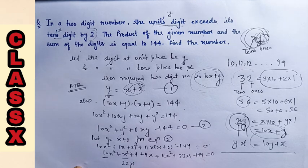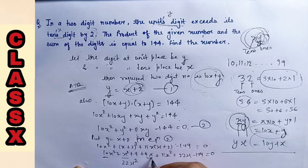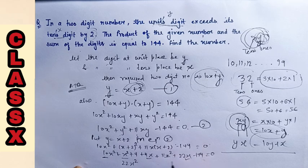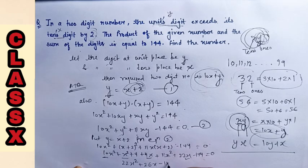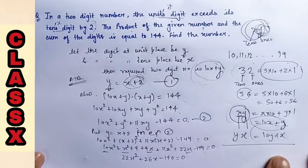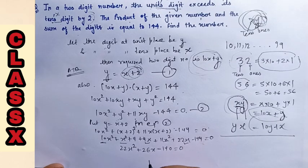And further I have coefficient of x, so 4 and 22, that is 26x, and this is minus 140 equals 0. Now we will further take common 2 to make it easy.